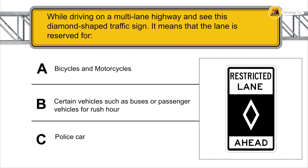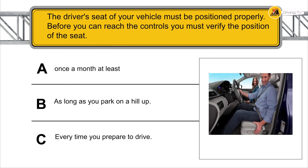When driving on a multi-lane highway and you see a diamond-shaped traffic sign, it means that the lane is reserved for certain vehicles such as buses or passenger vehicles during rush hour.